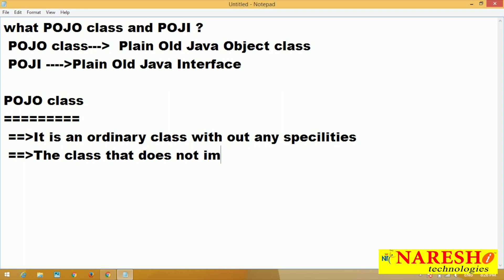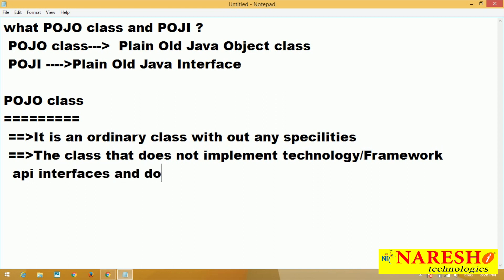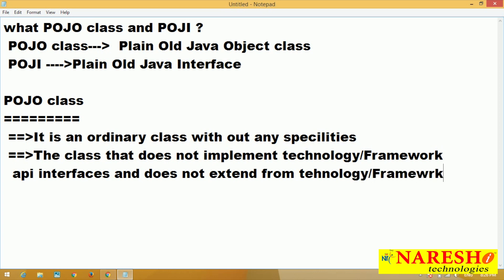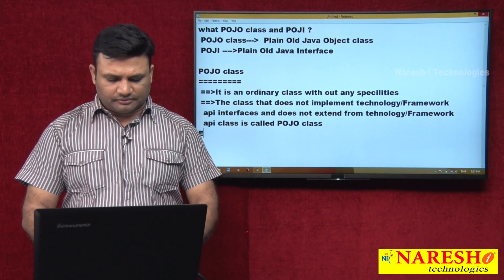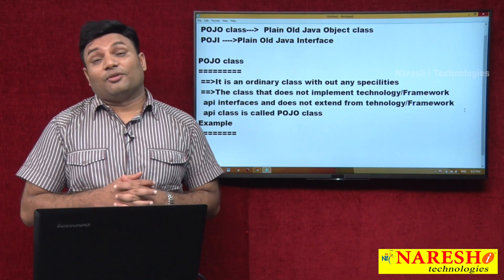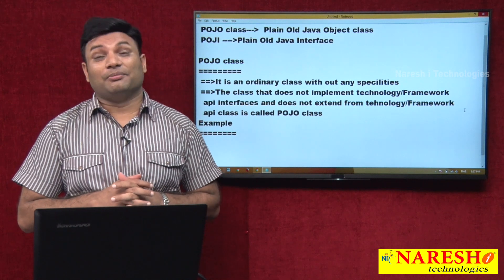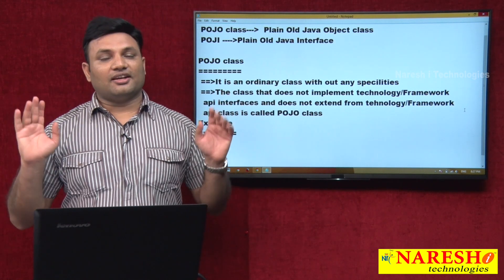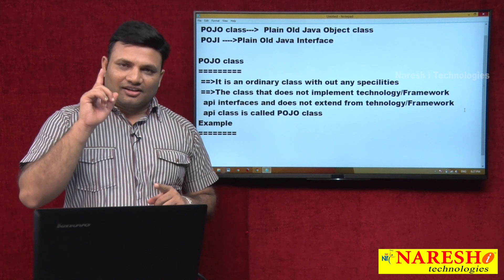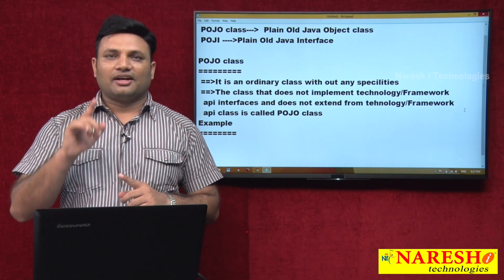The Java class that does not implement technology or framework API interfaces and does not extend from technology or framework API classes is called a POJO class. Let me give some examples. By listening to this, do not come to the conclusion that POJO class is against inheritance or against implementing interfaces — that is wrong thinking.